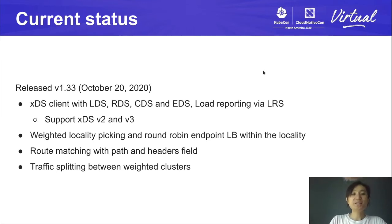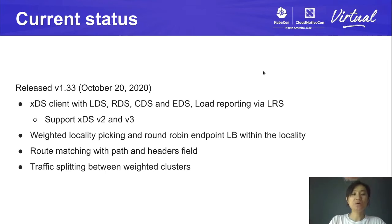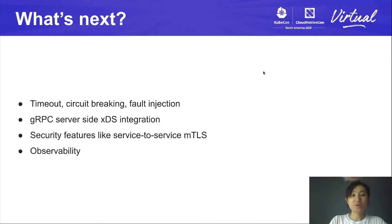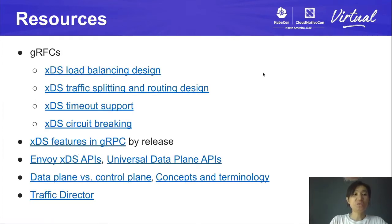As of October in gRPC release 1.33, our XDS client already supports the four main XDS services and we support load reporting via LRS. This includes XDS version v2 and v3. In terms of features, we support load balancing within localities and load balancing across localities. We also recently added support for path matching, header matching, and traffic splitting. We're currently working on timeout, circuit breaking, fault injection, XDS support on the server side, as well as security and observability. You can watch the progress on GitHub and you're very welcome to contribute. I also included gRPC design docs in the resources in case some of you are interested in how the XDS implementation is done within gRPC.